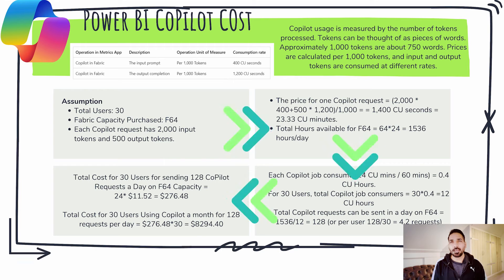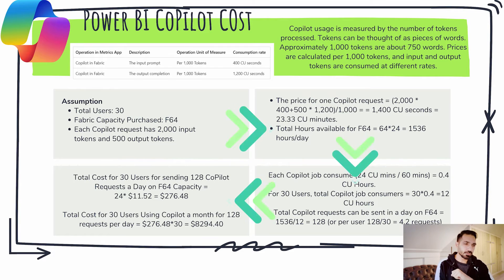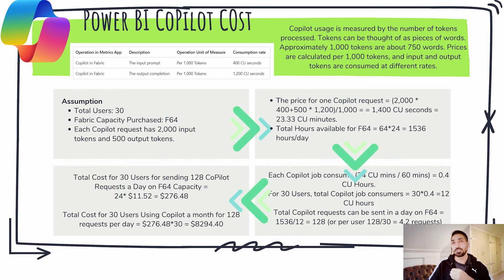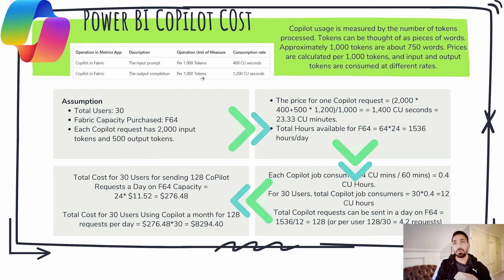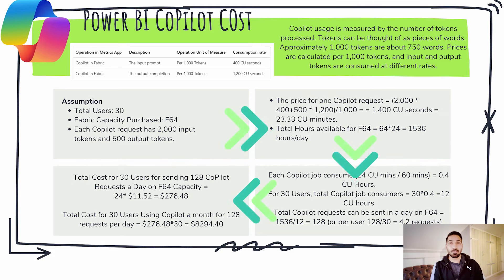Now let's talk about Microsoft Copilot cost. Copilot is based on the OpenAI solution and it works based on tokens — some tokens are consumed on input and some on output. As you can see on screen, approximately 1,000 tokens are about 750 words. If you calculate the cost for 30 users, those 30 users can send around 4 to 4.5 requests. This is just an example based on assumed numbers of users and CUs consumed — in practice, situations can vary.